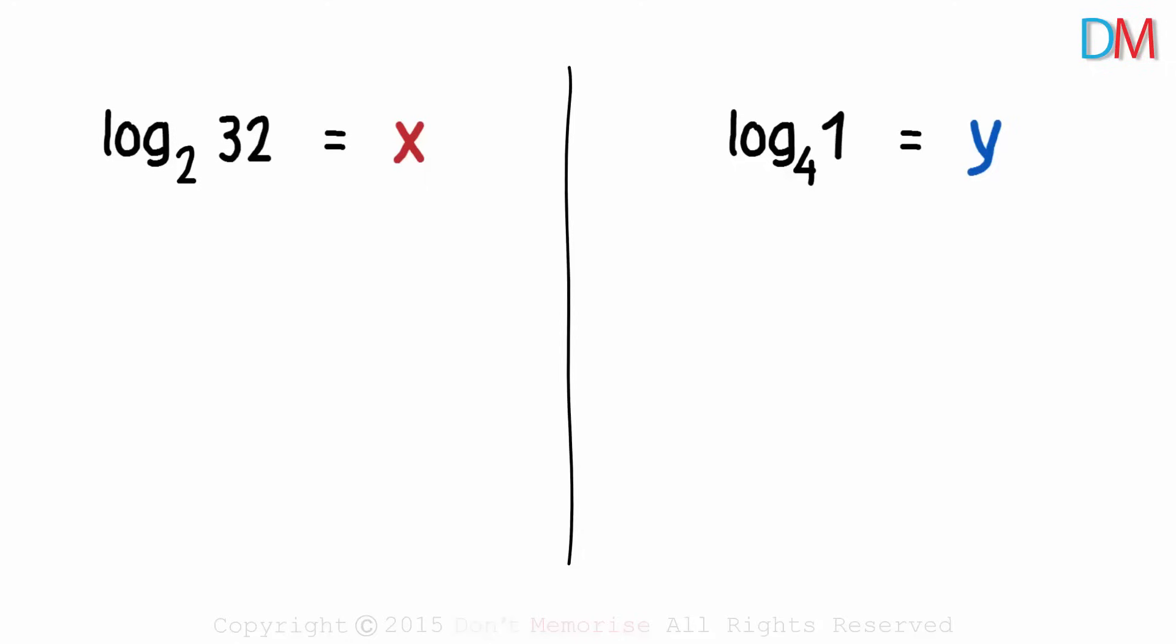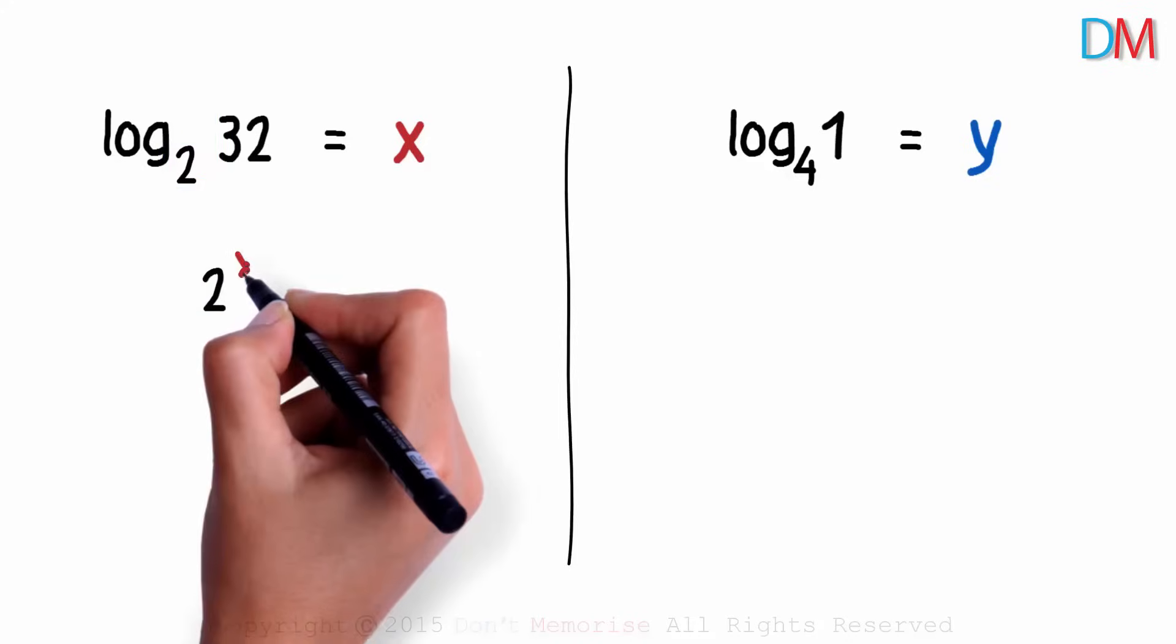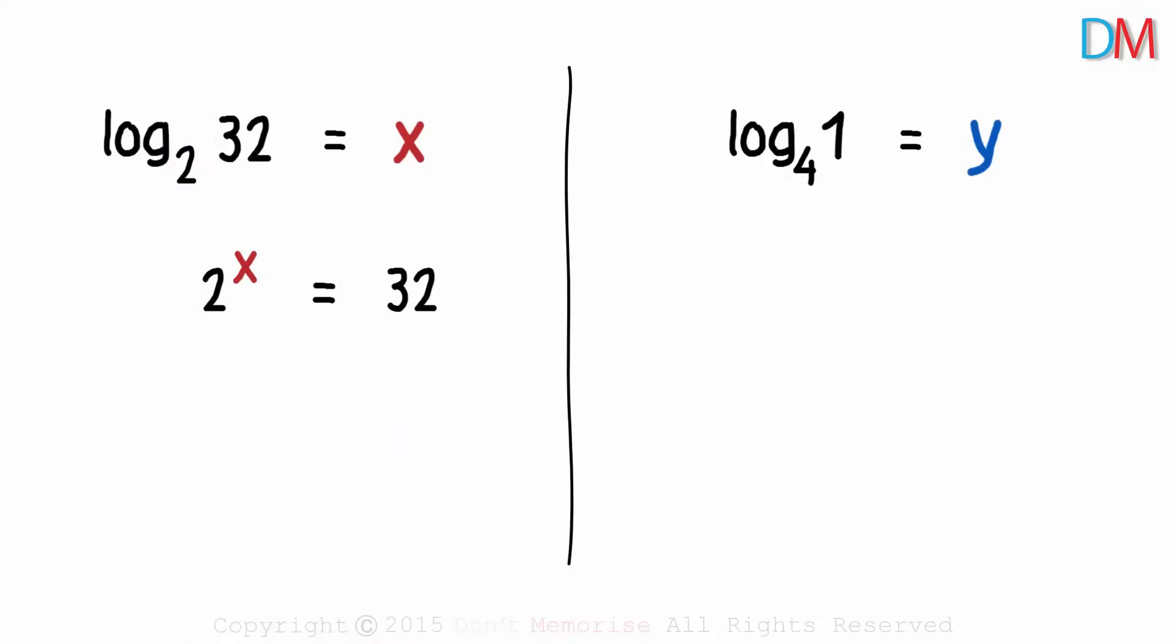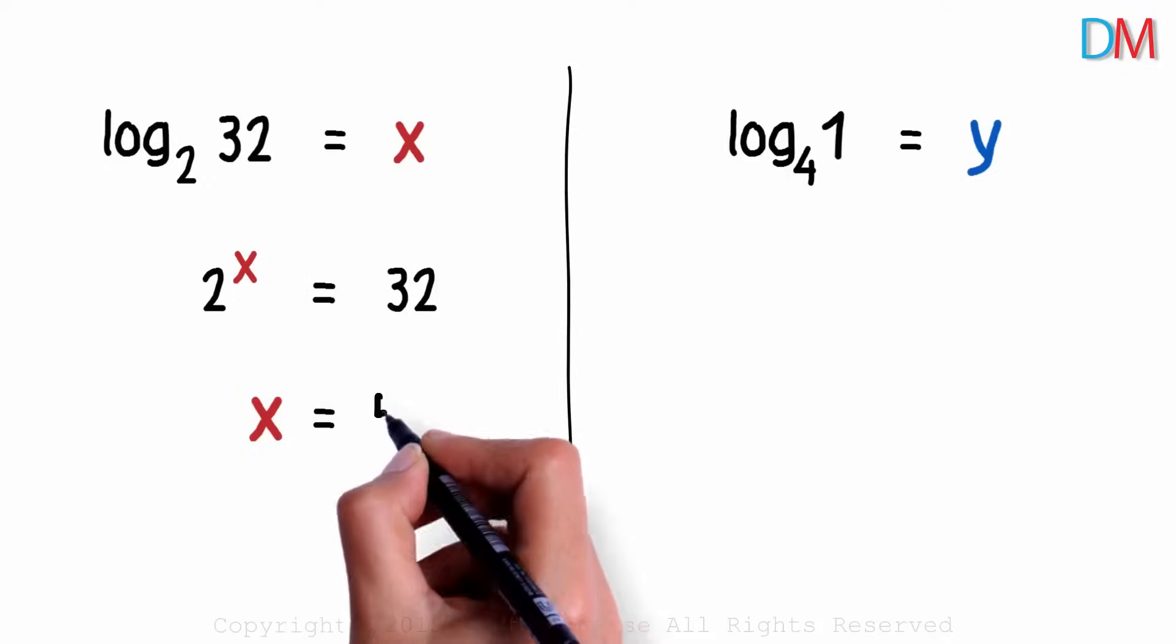So how did you write the first equation in exponential form? 2 raised to what gives us 32? 2 raised to the power x gives us 32. And we know that 2 raised to 5 equals 32. The value of x is 5.